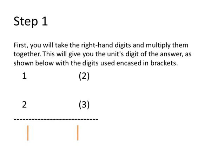The first step is, simply you take the right hand digit and multiply it with the right hand digit of the other number. I have put those numbers in brackets. So actually, you multiply the 2 which is the right hand digit of 12 and 3 which is the right hand digit of 23. So you multiply and you get the answer as 6. So 6 is the units digit of the overall answer.